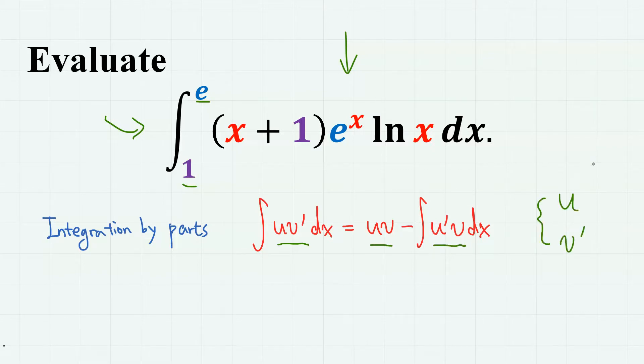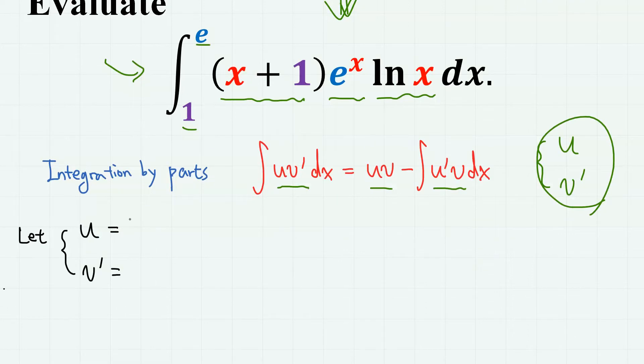So we have to designate u and v', but here we actually have three functions multiplied: the polynomial, exponential, and logarithmic function. So how do we divide this into u and v'? I am going to let u as (x+1) times ln(x) and v' as simply e^x.